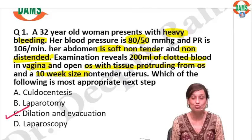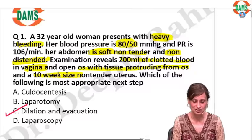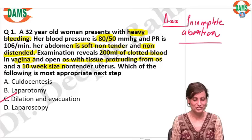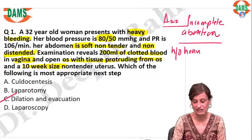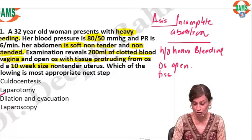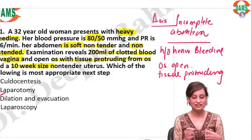Now let's figure out what are we dealing with. What is your diagnosis? The diagnosis is incomplete abortion. How do we reach that diagnosis? The patient has history of heavy bleeding and, very importantly, the os is open — not just open, you can see tissue is protruding from it. So tissue protruding from the os with history of heavy bleeding — we are dealing with incomplete abortion.